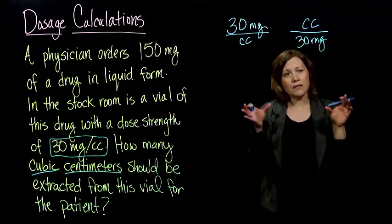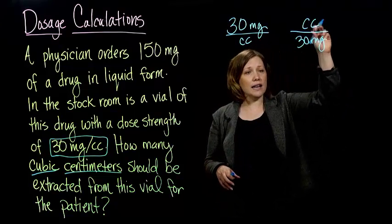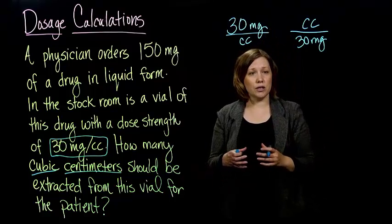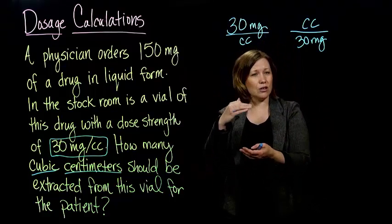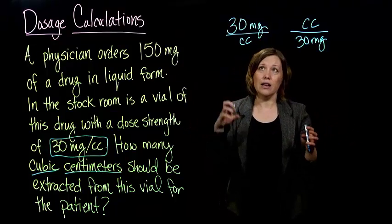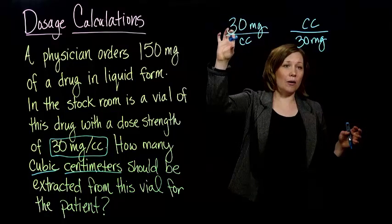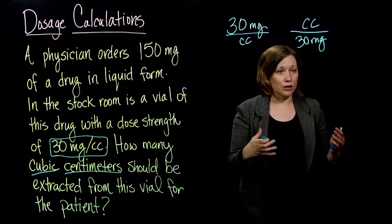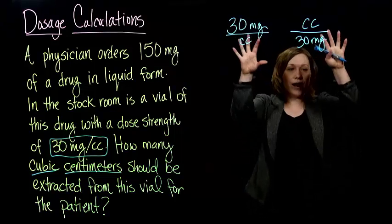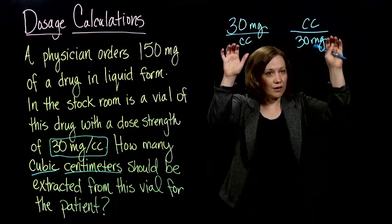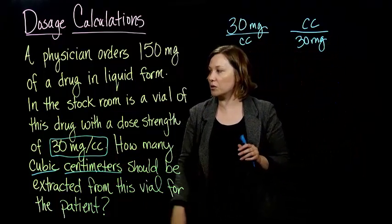When I'm writing these conversion factors, I can write it either way, because both ways, these two things are equivalent to each other: 30 milligrams and one cc. So this conversion factor is kind of like a form of one. Whether I write it on top or on the bottom, it's the same thing on the top and the bottom no matter what, so they are equivalent to each other. I can write it in whatever way helps me solve my problem, but just for these conversion factors, just for these dose strengths.